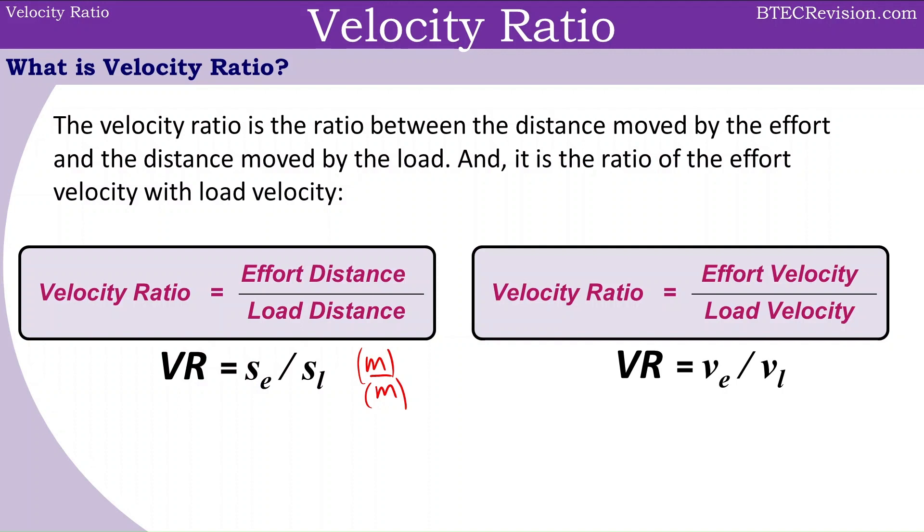The short form is VE over VL, where we have effort velocity divided by load velocity. The units would be meters per second divided by meters per second. Therefore, that cancels out to give you one. So velocity ratio has no unit.